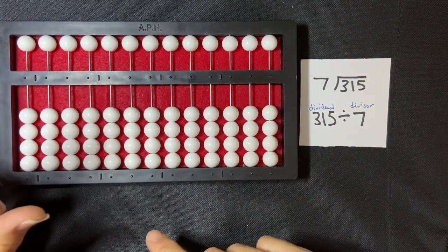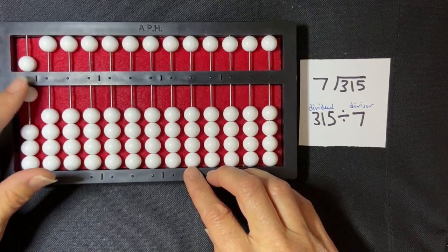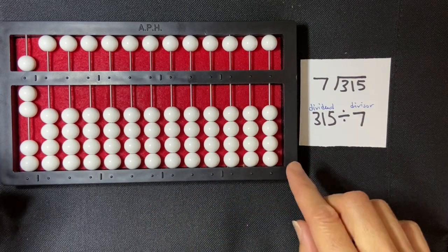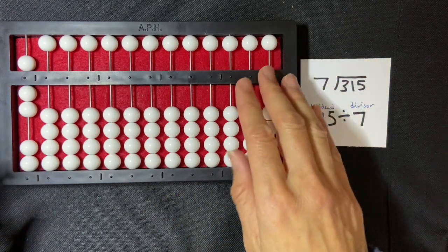I'm using my counting method there, doing a four-five exchange. I'm going to start setting my dividend from the right-hand side, just like I normally set a number. So one, two, three hundred and fifteen.